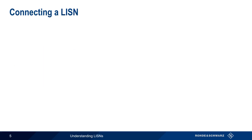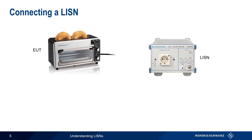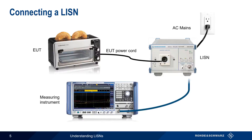Let's look at how a LISN is connected when making a conducted emissions measurement. The EUT's power cord is plugged into the LISN, and the LISN is plugged into the AC mains network. Our measuring instrument — here, an EMI receiver — is plugged into the LISN's measurement port in order to measure the levels of conducted emissions.